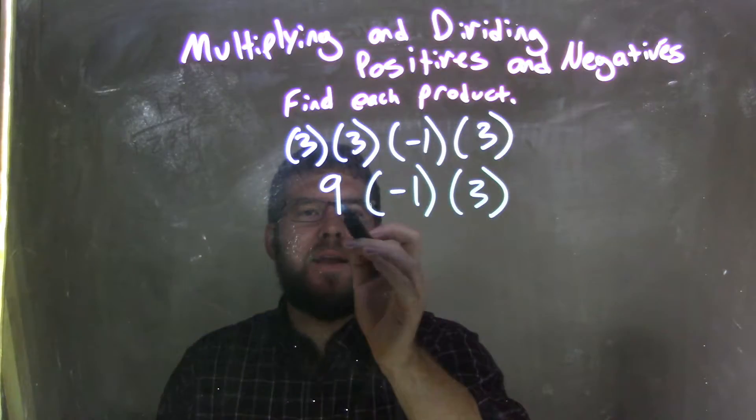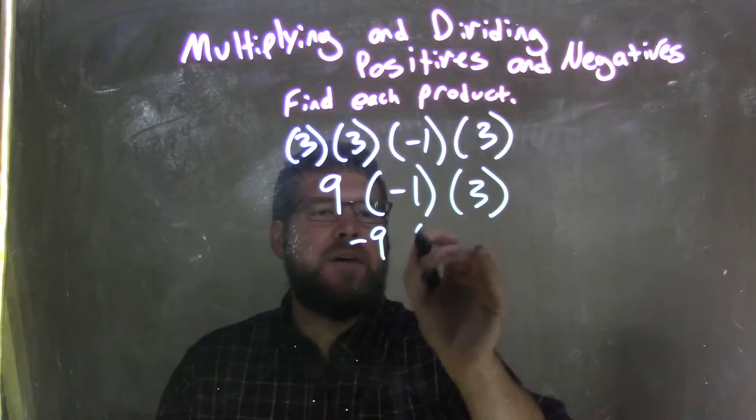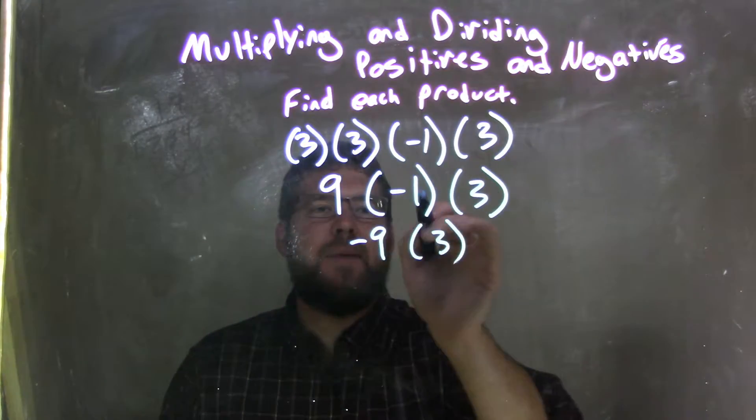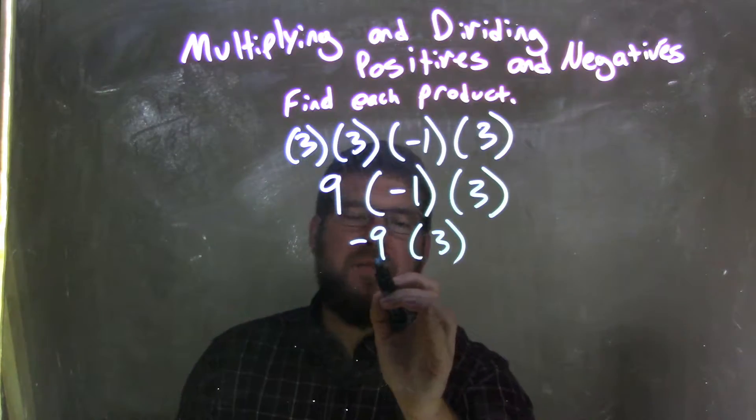Now let's go left to right again. 9 multiplied by negative 1 is negative 9 times this 3 that's going to come down, this last 3. 9 times negative 1 is negative 9. Positive times negative is negative, and 9 times 1 is 9. So we have negative 9 here.